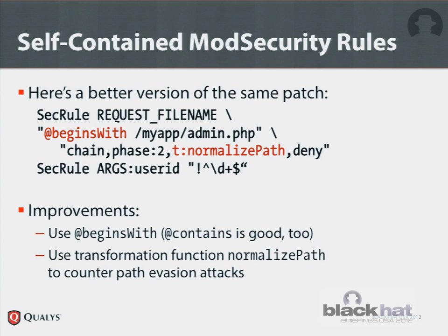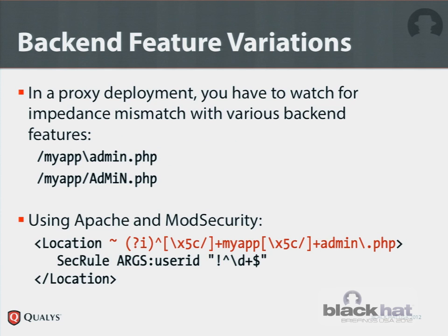There are ways to fix these issues. One way is to use a better operator — instead of string equality, use 'begin with'. We can also use ModSecurity's transformation pipelines, providing instructions on how to transform input before comparison. ModSecurity has a transformation function called normalize_path, which normalizes a path so it looks like a Unix path. But every time we change our rules to fix a problem, we can increase the complexity of the problem to break it again.